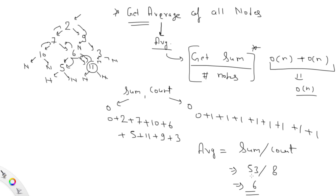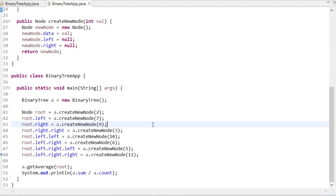At the end, average = sum / count = 53 / 8. With integer division, the answer is 6. The time complexity is still O(n), but we've improved from two iterations to just one iteration to solve this completely.